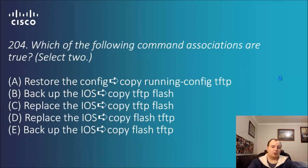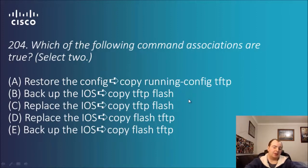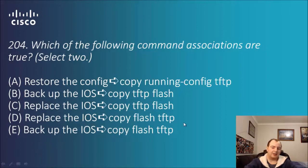Question 204: which of the following command associations are true? Pick two. 'Restore the config - copy running-config TFTP': that's backing up to a TFTP server, not restoring. 'Back up the IOS - copy TFTP flash': potentially replaces the IOS since IOS is stored in flash. 'Replace the IOS - copy TFTP flash': yes, that's one answer. 'Replace the IOS - copy flash TFTP': the IOS doesn't start from TFTP, so that's not replacing it. 'Backup the IOS - copy flash TFTP': that's backing up the IOS stored in flash. The answers are C and E.